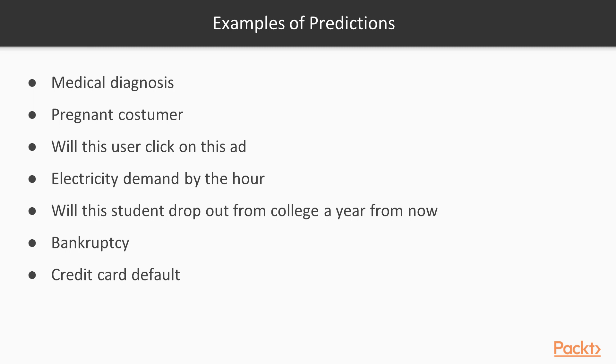So if a user will click an advertisement in a website, this is also considered a prediction. Predicting the electricity demand by the hour in some city, this is also considered a prediction. And here we have other examples of this.